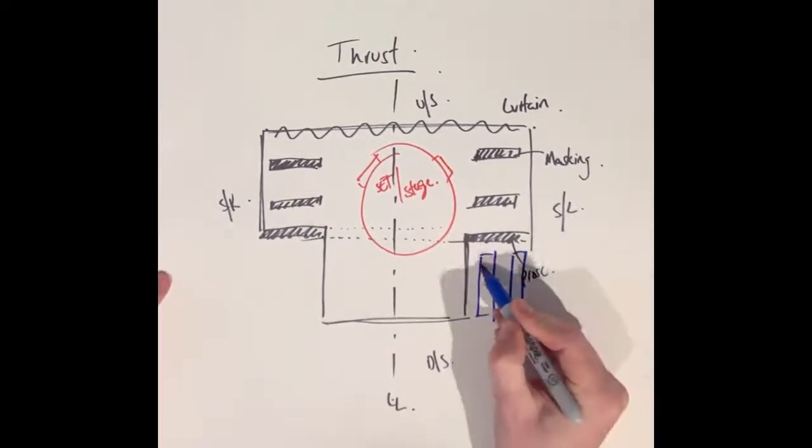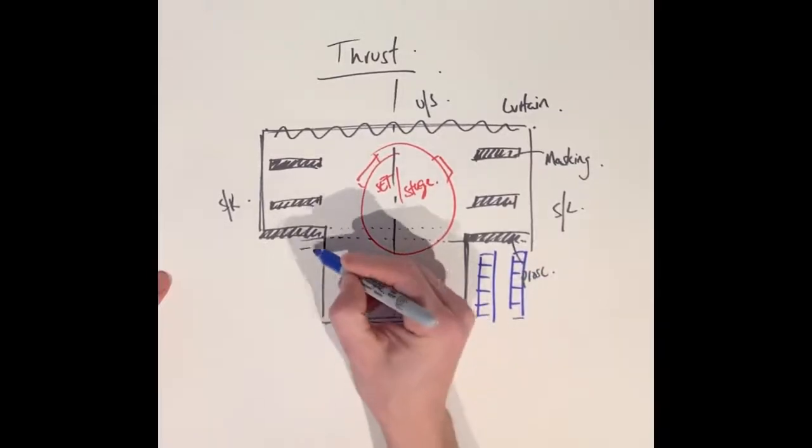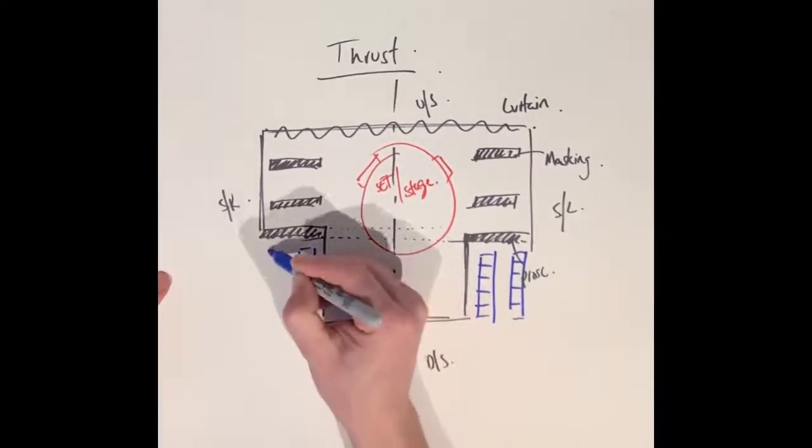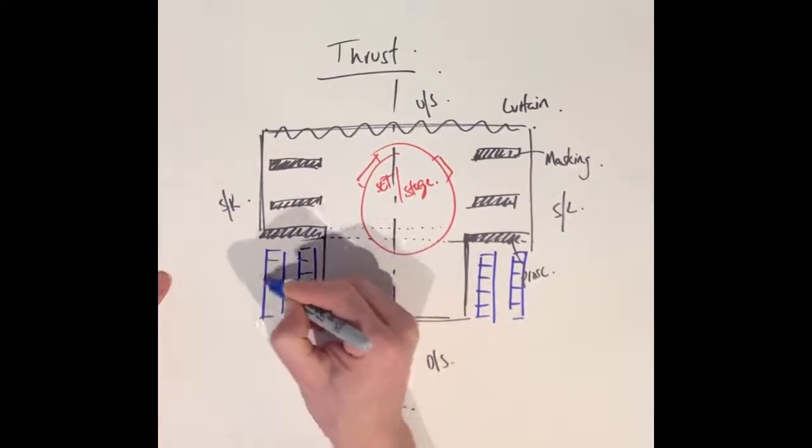Next step in blue pen is to add the audience. So here because it's a thrust I can have audience either side of that small section poking out the front. I am using rectangles just to draw where those seats will be.